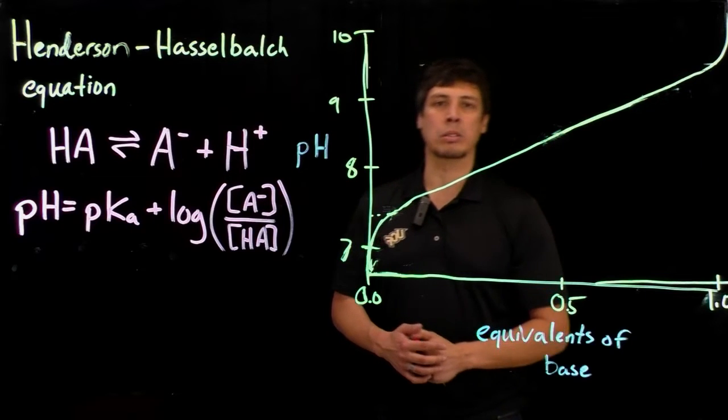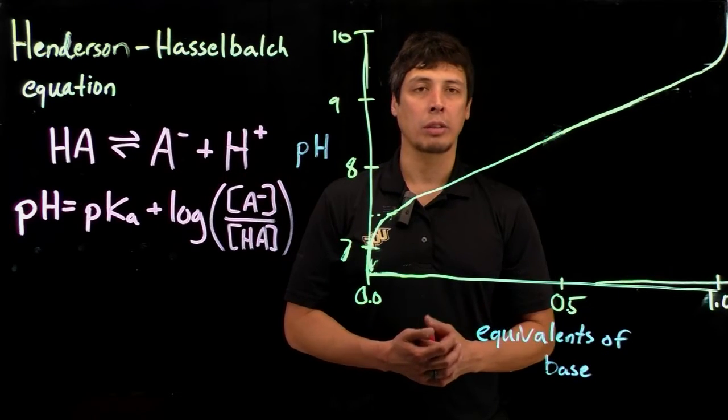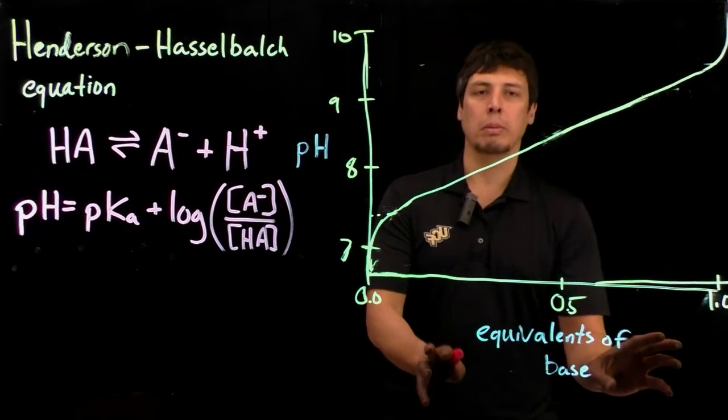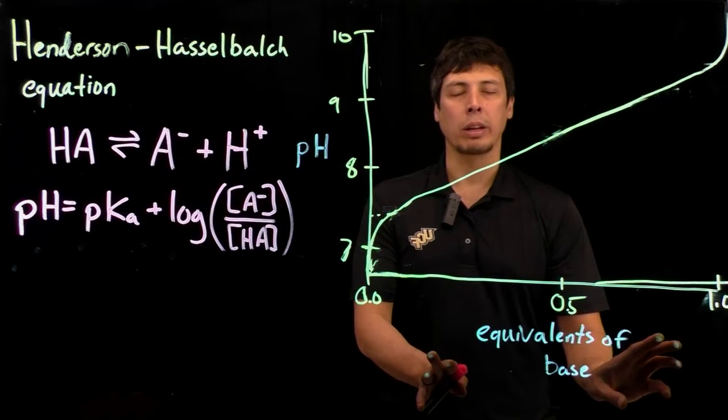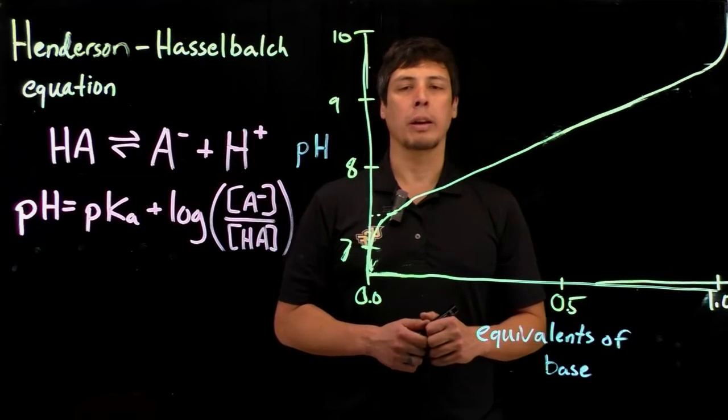If we're doing the opposite, where we're titrating with acid, we can do that too. In this case, we have equivalence of base, so we're titrating some weak acid with sodium hydroxide, and we're looking for the pKa.